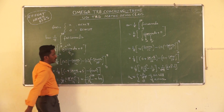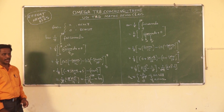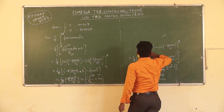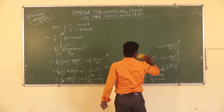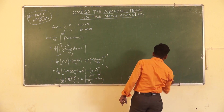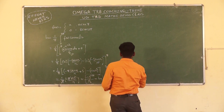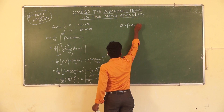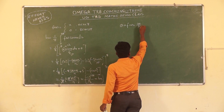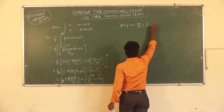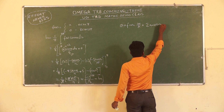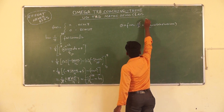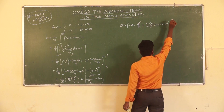So we have a₀, aₙ, and bₙ. The required Fourier series is: f(x) = a₀/2 + summation of [aₙ·cos(nx) + bₙ·sin(nx)]. From these values, we can substitute a₀ and the computed coefficients into this general Fourier series formula.